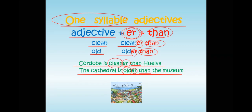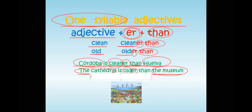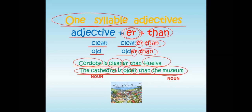In this case you add E-R. You are comparing Córdoba with Huelva, or the cathedral with the museum — one noun to another noun. That's one way. Remember: with one-syllable adjectives, you use -ER.